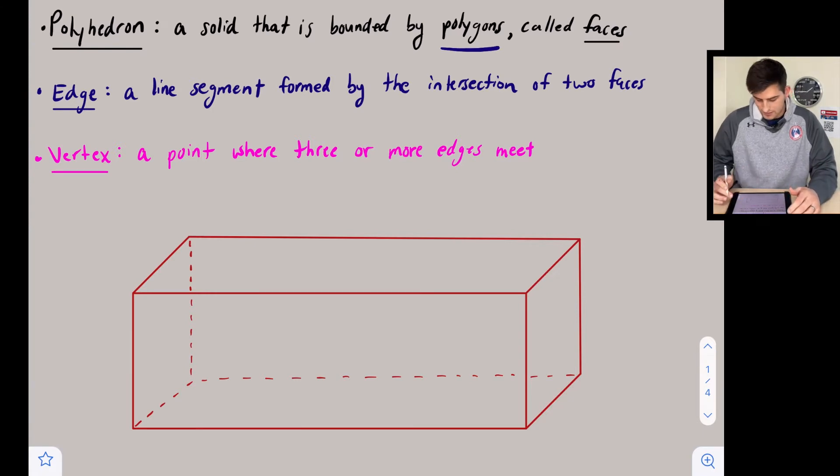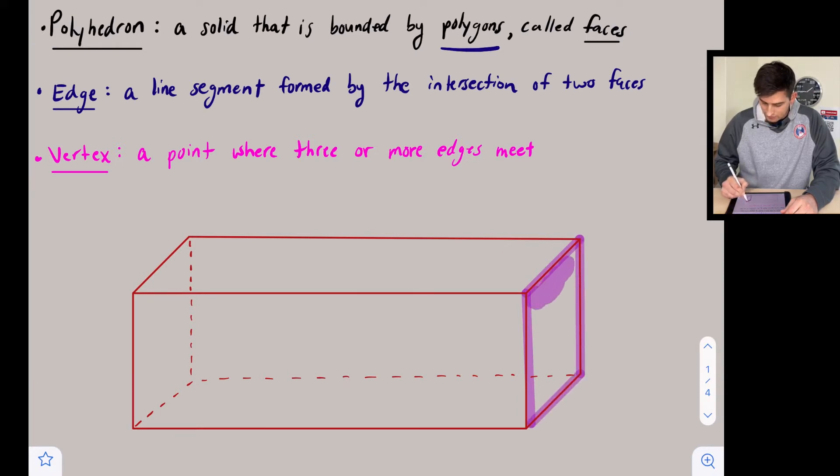If we look down here at this rectangular prism at the bottom, a face would be any one of these regions—like a square on the side or a rectangle. This entire region right here, this would be a face.